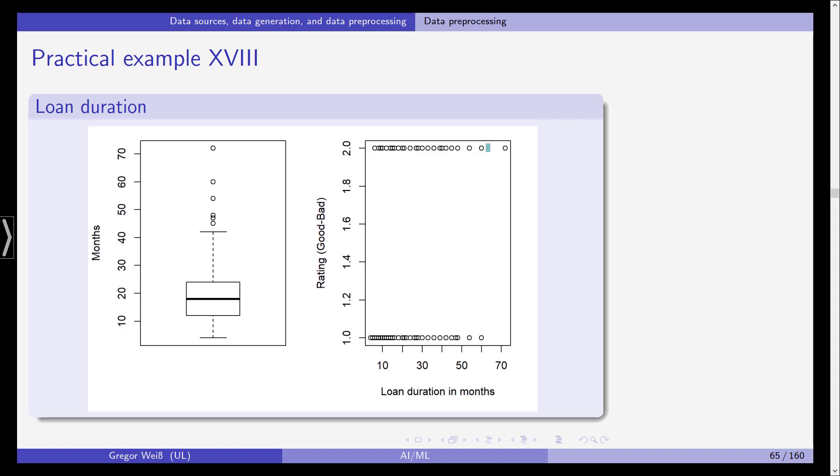Now let's turn to the loan duration. The first plot on the left shows you a box plot across all thousand observations. And if you divide this up into good and bad credit ratings, remember that it is defined as a variable that takes on one and two as values. You can see that it seems as if, and this is only speculative if we are honest, the loan duration if it's lower seems to predict a low value for rating. And if it's higher, it seems to predict a higher value of ratings. So low loan duration seems to imply a good rating and the other way around.